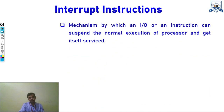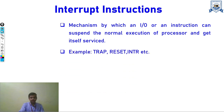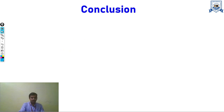Interrupt instructions are mechanisms by which an input/output device or instruction can suspend normal execution. A request from an I/O device comes to the processor, which transfers control of program execution to that interrupt device. After servicing the request, control is returned to normal execution. Examples include TRAP, RESET, and INTR interrupts.